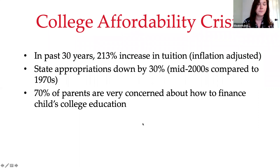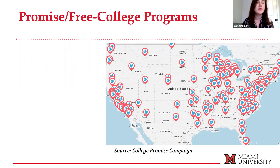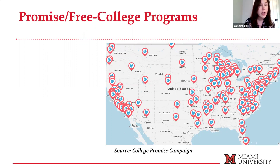A lot of policymakers around the nation are talking about this policy solution — free college, tuition-free college, also known as promise programs. This map shows the most recent estimate of where promise programs are. Right now we actually have 19 states with a statewide tuition-free college program, and also around 300 different local cities or regions with free college programs.